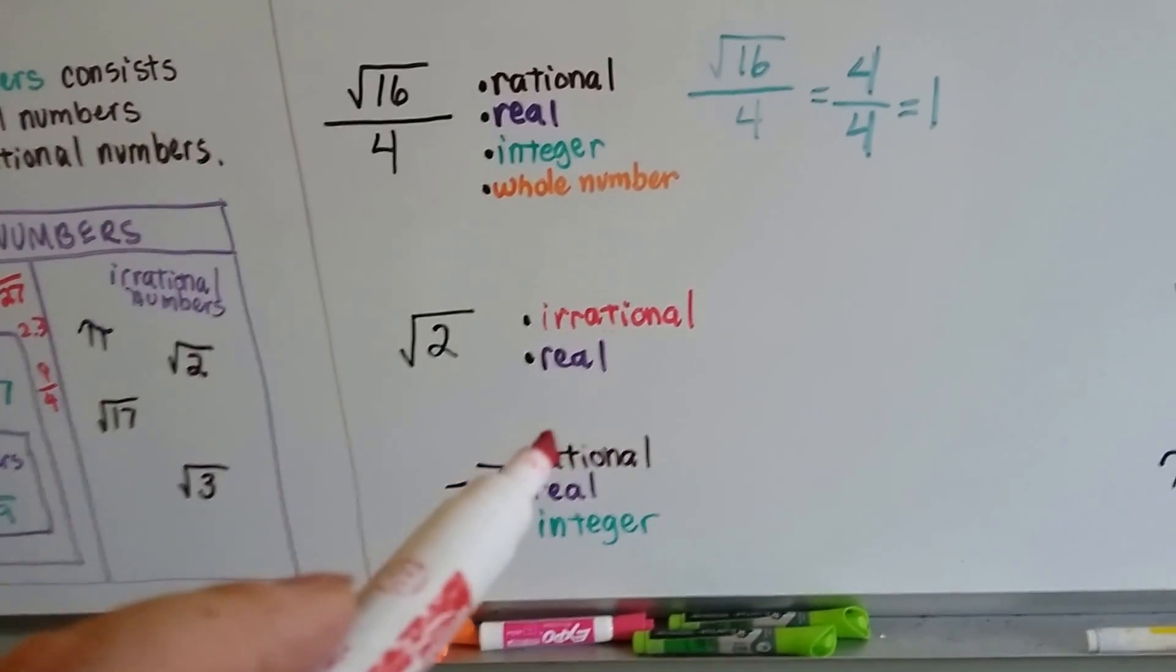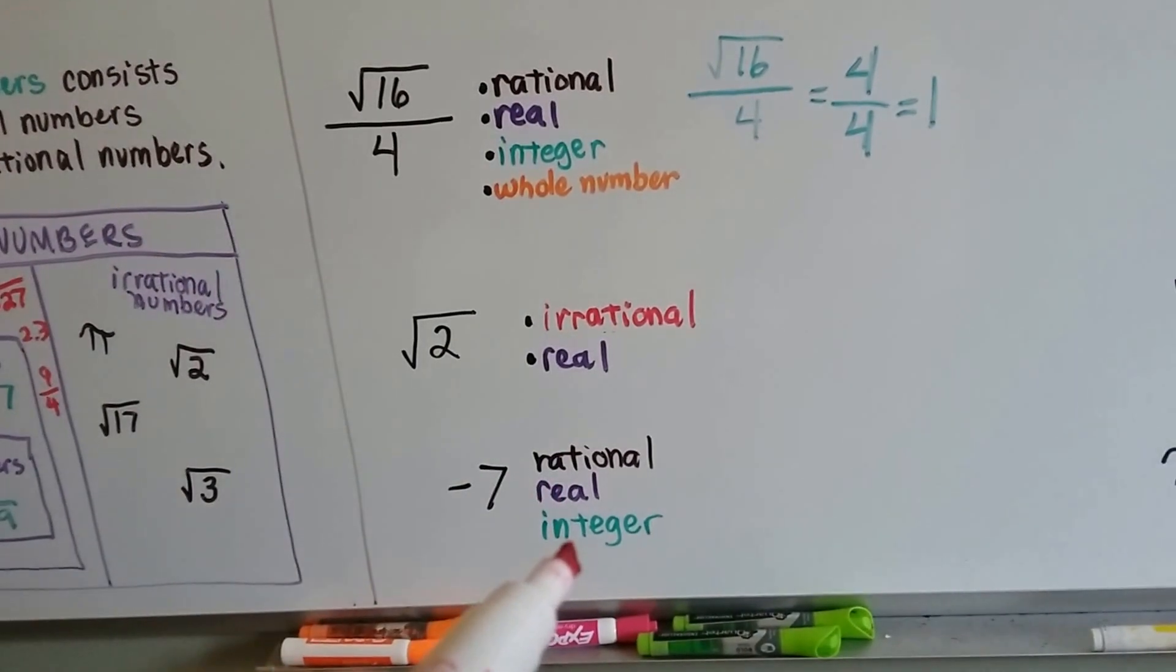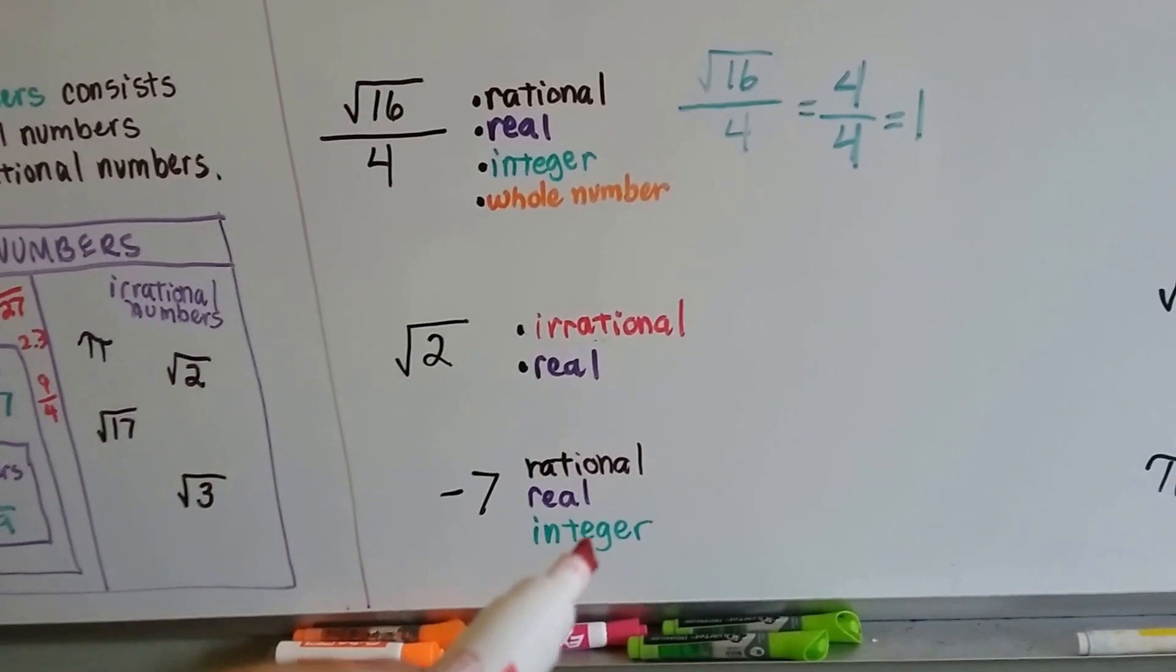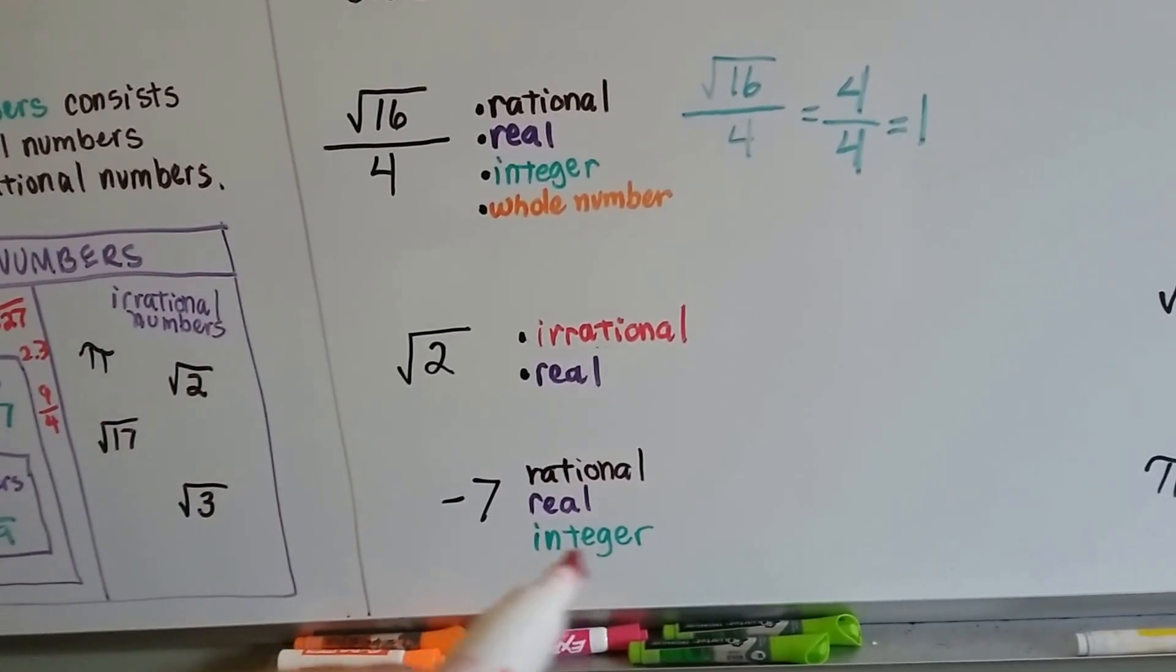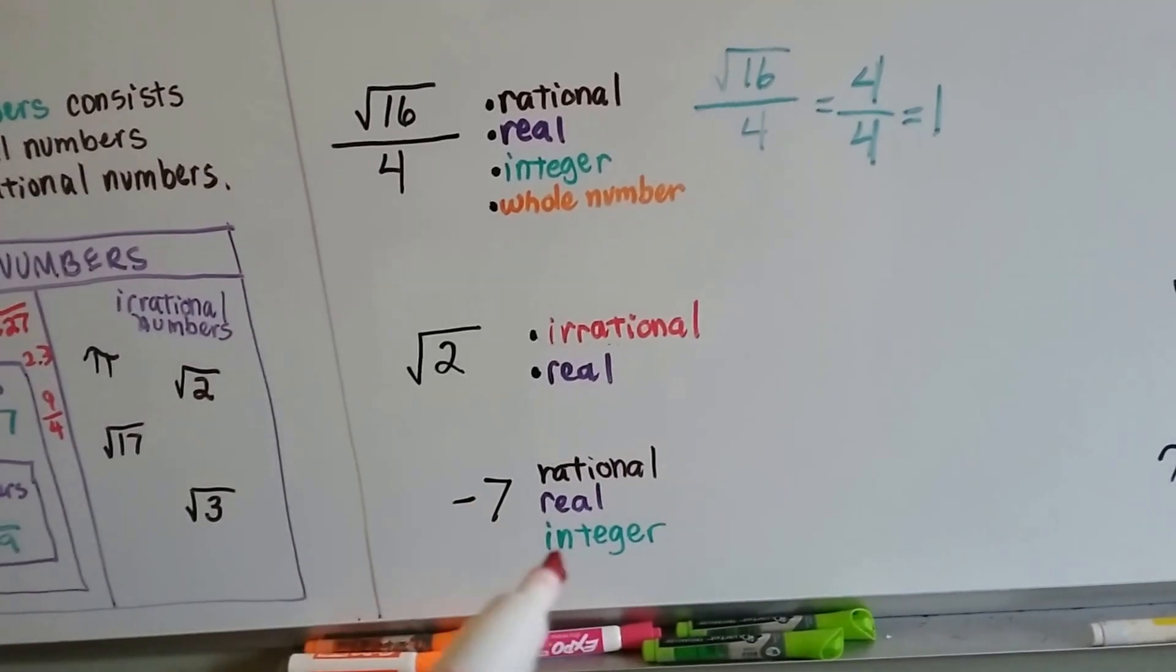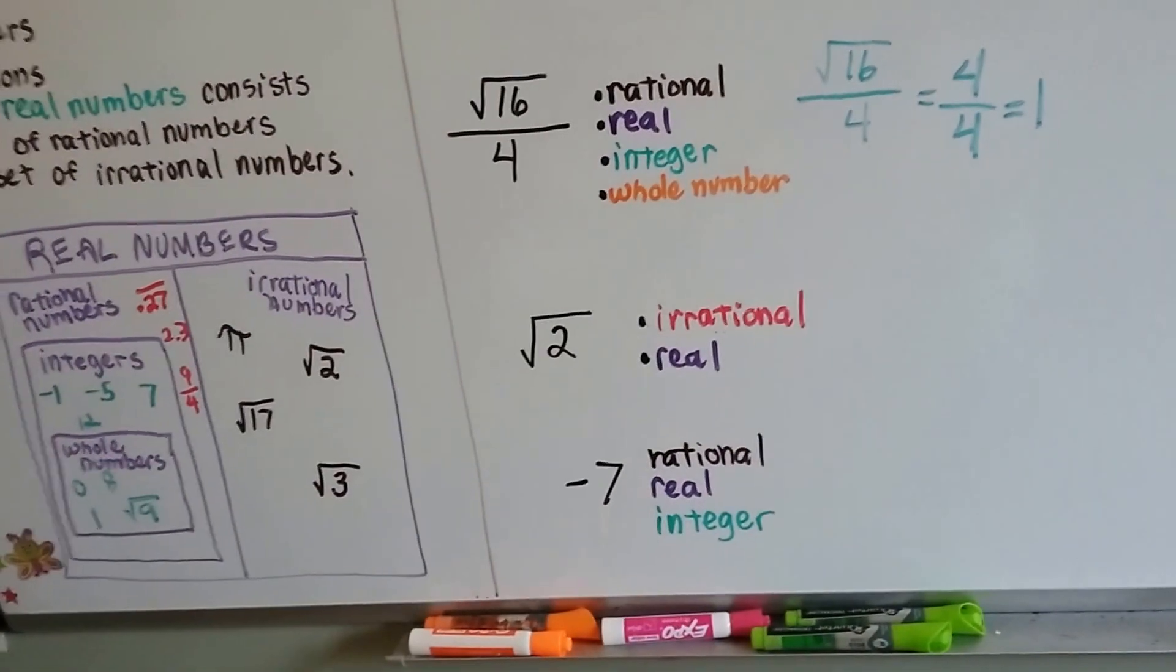Negative 7 is a rational number. It's a real number and it's an integer. Remember, integers are counting numbers and they're opposites across the number line, across 0. So, negative 7 is an integer. It's a real number and it's a rational number.